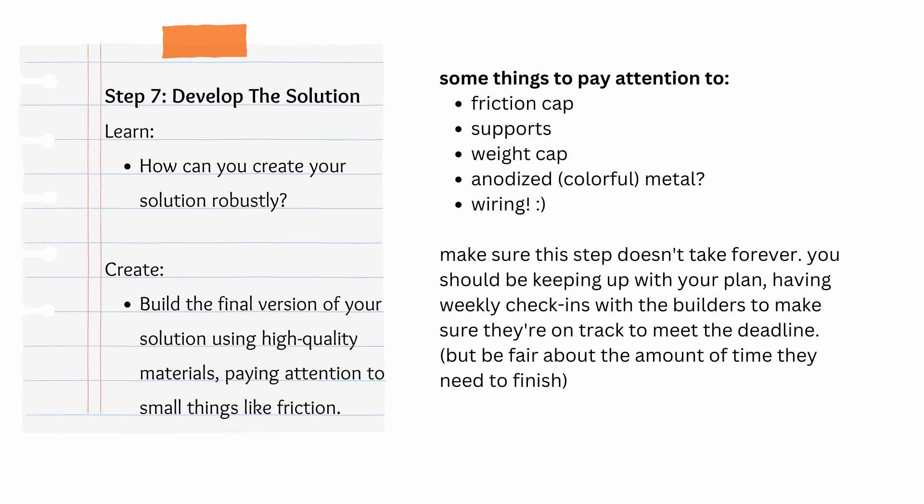The next step is developing the solution. Here you want to take all the results and build the design that you chose in the best possible way, paying attention to things like friction, weight, proper supports, and anodized metal if you want to make your robot black or colorful. Just develop the solution in the best way possible, and then you'll have a really robust robot that you can take to competition and it won't break apart immediately.